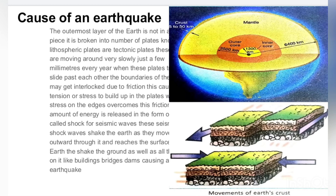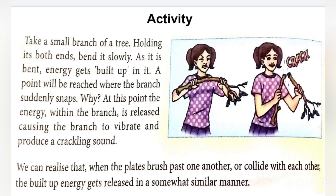There is an important activity in your books that explains how built-up tension creates seismic waves. You take a dry twig from the garden and try to bend it. As you bend it, all the force accumulates at one particular point. When the force reaches a peak, the twig breaks - the tension is released - and at that moment you will also experience some vibration in your hand. This shows that whenever tension is released, shock waves or vibrations are produced. The same thing happens with tectonic plates, and that leads to an earthquake.